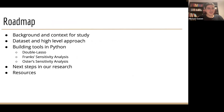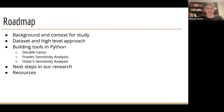As a bit of an outline of our talk, we'll give a bit of background and context for the study. We'll discuss the dataset that we used and an approach to how we extracted some meaning from it. The tools that we built out in Python: specifically Double Lasso, Frank sensitivity analysis, and Oster sensitivity analysis. Then we'll wrap it up with next steps in our research and the resources that we used.